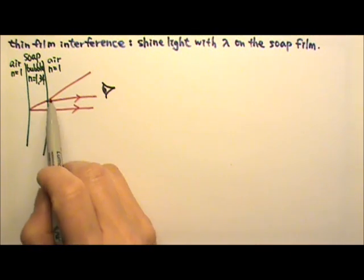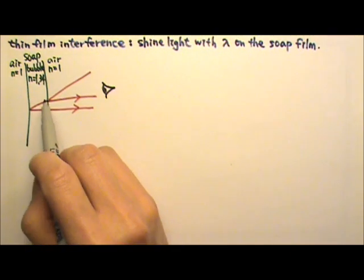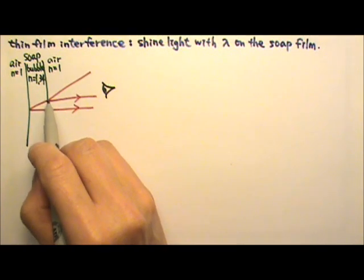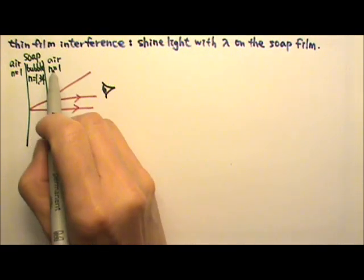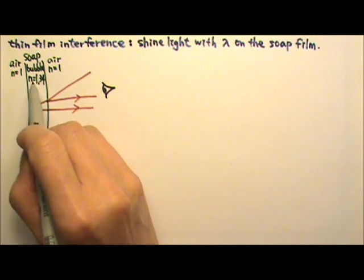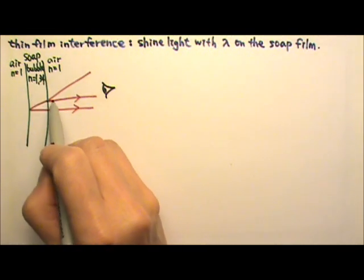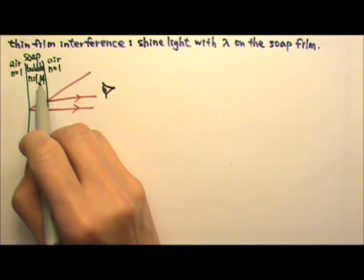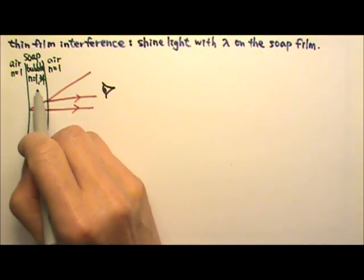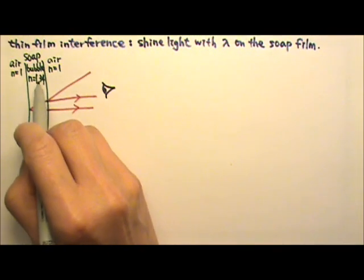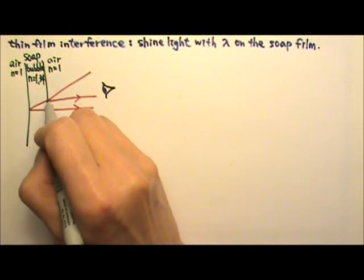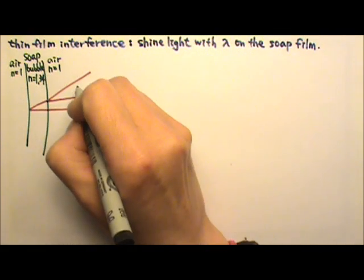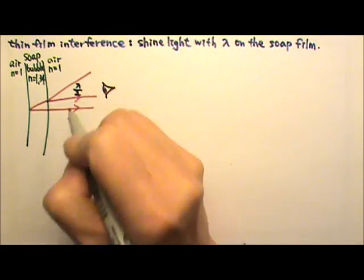First, we have to look at the reflection to see if the peaks turn into troughs — whether we have a half-wavelength shift or not. This side is N equals 1, and the film is N equals 1.34. When a light ray gets reflected off a bigger N, it's reflected off a slower medium, which is like being reflected off a fixed end. So peaks turn into troughs, meaning we get a half-wavelength shift.